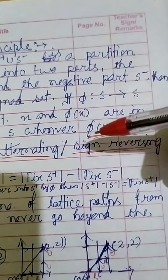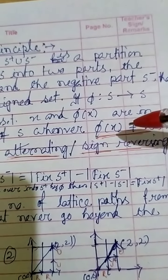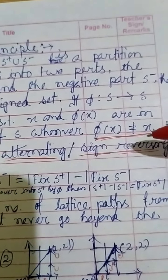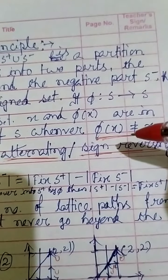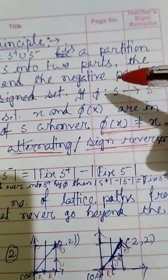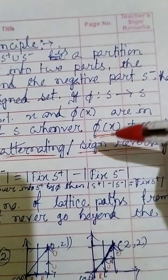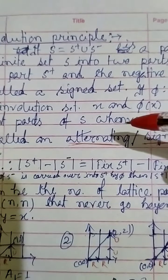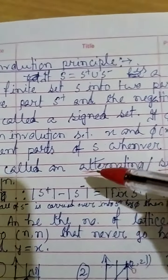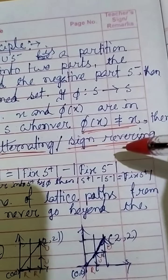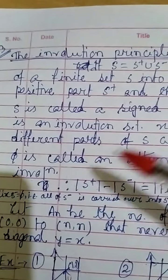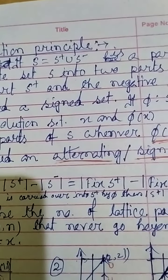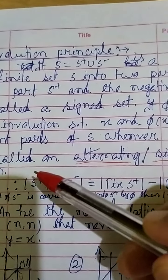This is obvious from the definition — φ(x) ≠ x means φ(x) and x are not equal and therefore they belong to different sets. This involution is said to be an alternating or sign-reversing involution.